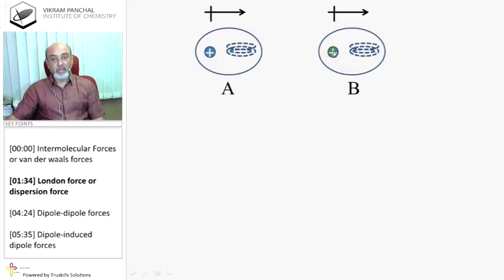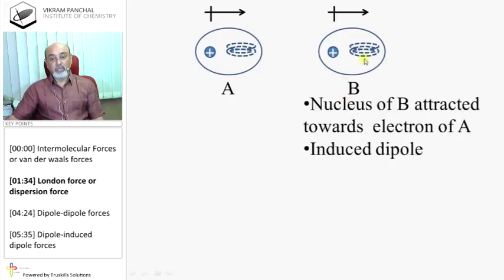And in B also, you will find that positive charge appears towards negative electron charge of A, and electron cloud is going in opposite direction. That means B also produces polarity. Nucleus of B attracted towards electron of A, and this will create dipole moment, which is called induced dipole on B.